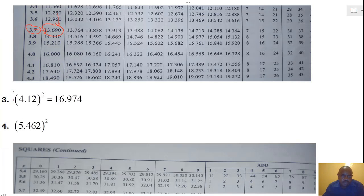Our third example is 4.12. From x, we locate 4.1. And inside our table, we locate 2. Hence, we have 0, 1, 2. And the 2 corresponds to 16.974. Hence, that is the square of our number.